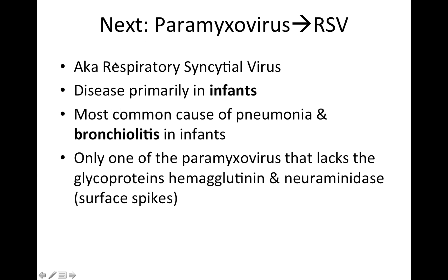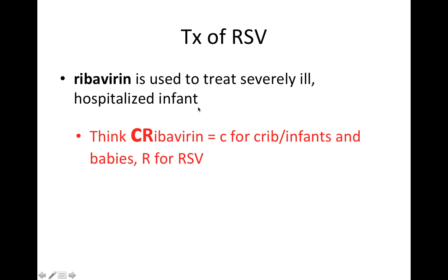Moving on to RSV, also known as respiratory syncytial virus — and here we see that word again, syncytial. This disease is primarily found in infants and is the most common cause of pneumonia and bronchiolitis in infants. It's also the only paramyxovirus that lacks the glycoproteins hemagglutinin and neuraminidase. For treatment, we use ribavirin for severely ill hospitalized infants. To remember this, put a C in front to get the word 'crib' — C is for crib or infants, and R reminds us it's for RSV.